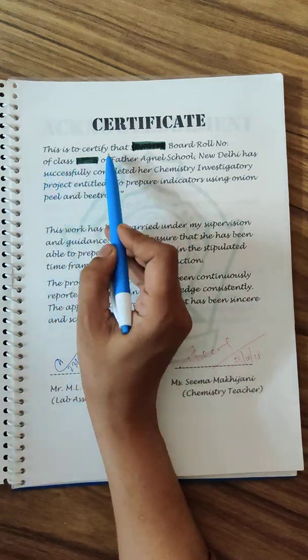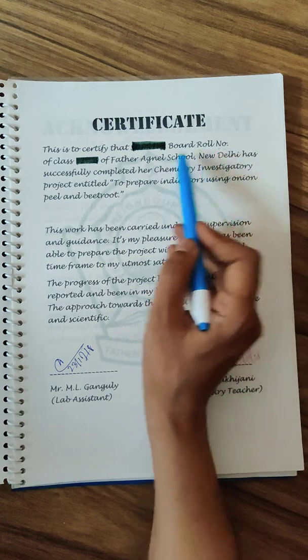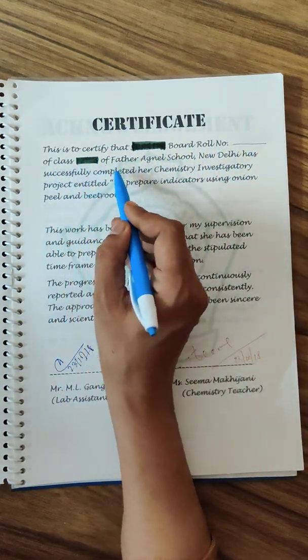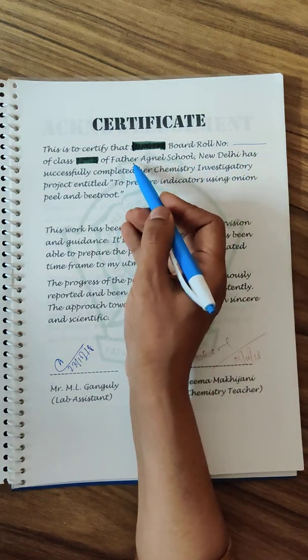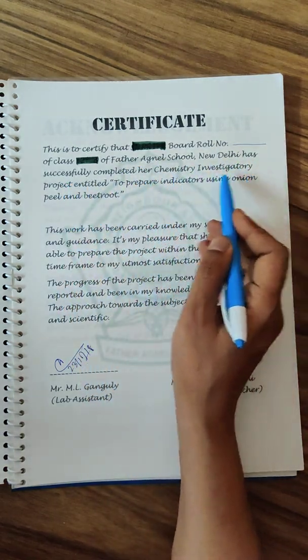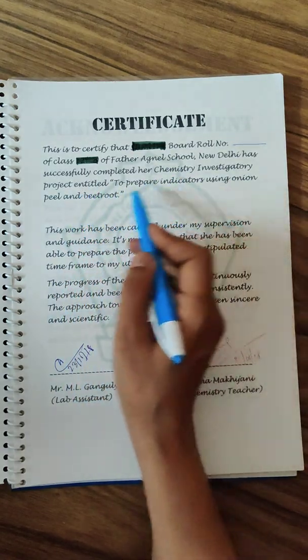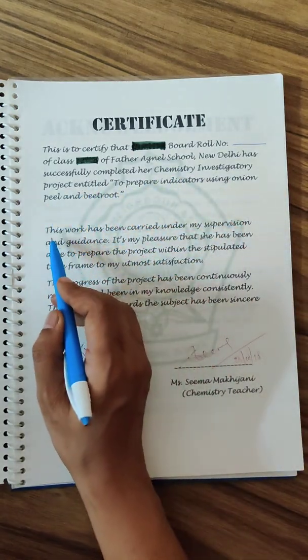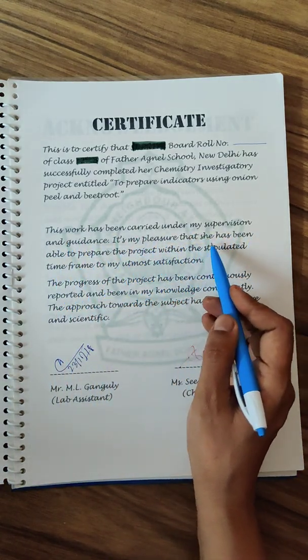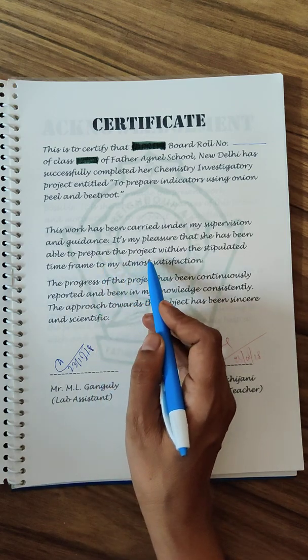This is the certificate where you mention that this is to certify that your name, board roll number is to be mentioned here, your class, from whichever school you are. This particular report is from Father Agnell School New Delhi. It is completed her chemistry project report which is to prepare indicators using onion peel and beetroot.